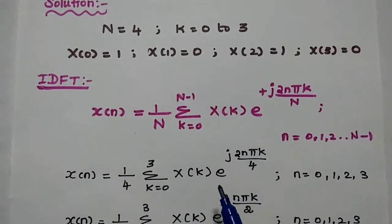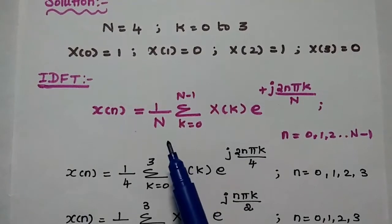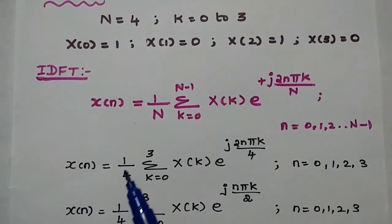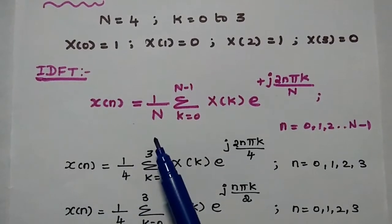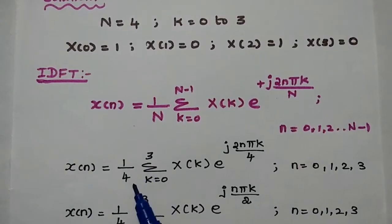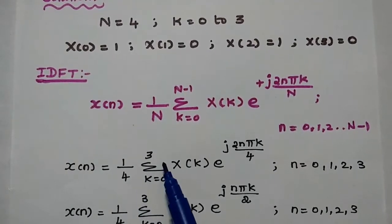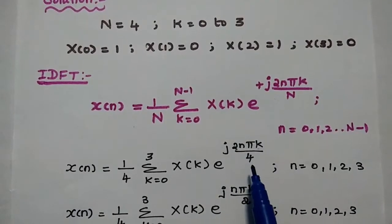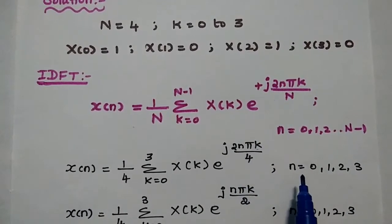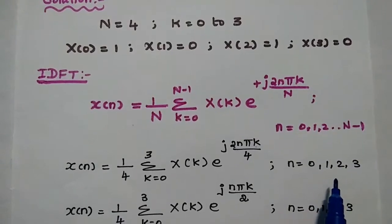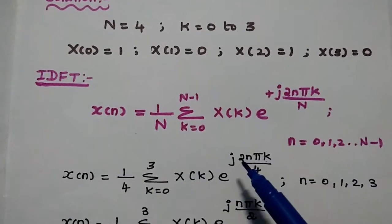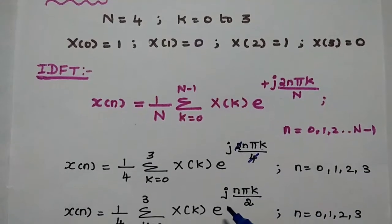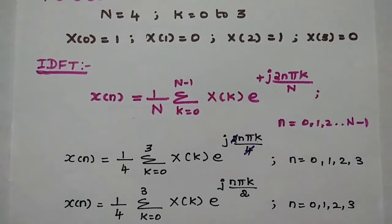We are going to substitute the capital N value into this formula. Then we get x(n) = (1/4) × summation from k=0 to 3 of X(k) × e^(j2nπk/4), where n varies from 0 to 3. We can further simplify this: since 2 and 4 simplify, we get e^(jnπk/2).